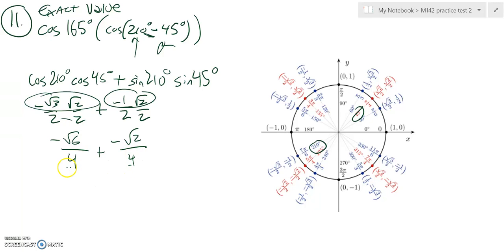Common denominator so we can add these together: negative root 6 minus root 2, all over 4.